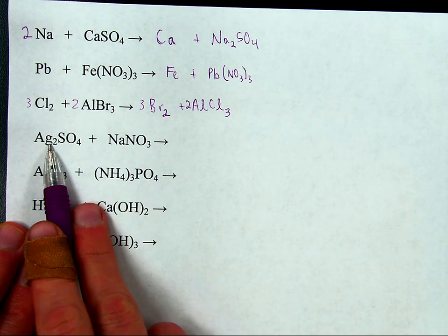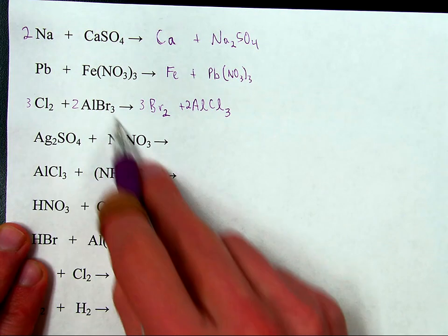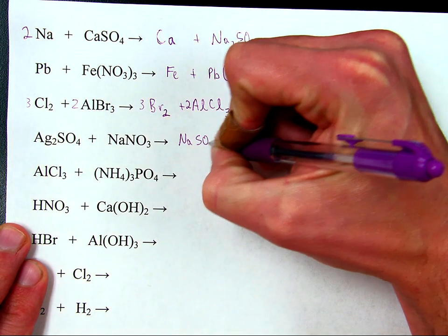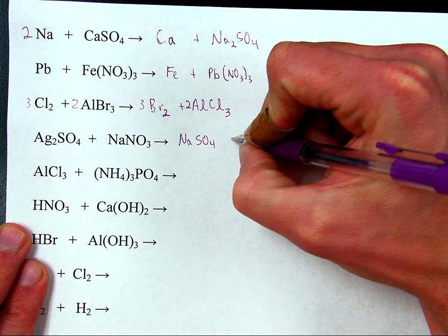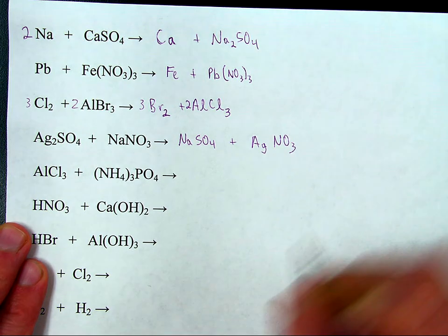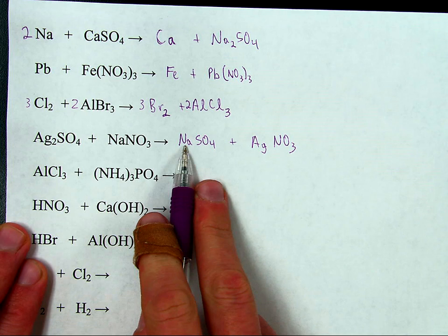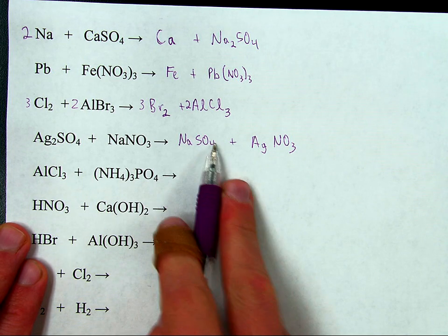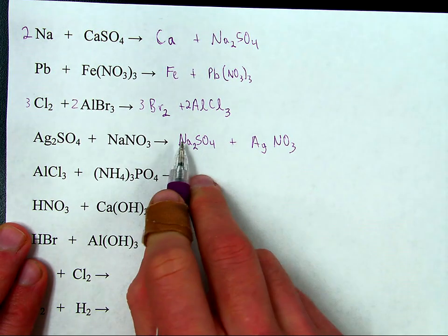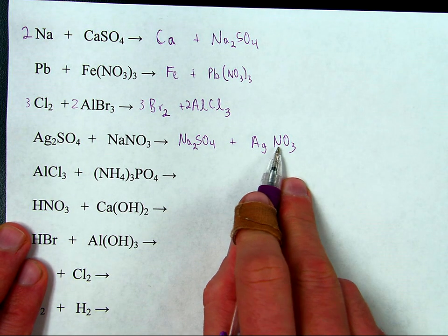No more pure elements. These are compound and compound, so we're going to assume they switch pieces with each other. Let's put the silver with the nitrate side and sodium with the sulfate side — so sodium sulfate and silver nitrate. That's step one. Step two: fix the formulas. Sodium is a plus one, sulfate is a minus two — so the formula is Na2SO4. Silver is a plus one, nitrate is a minus one — so AgNO3.